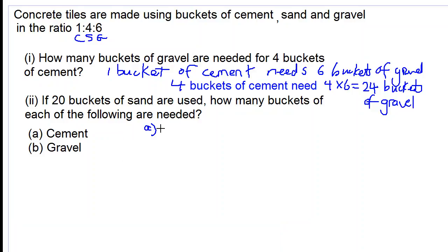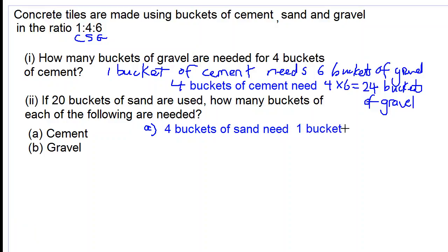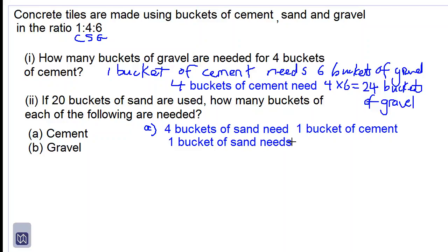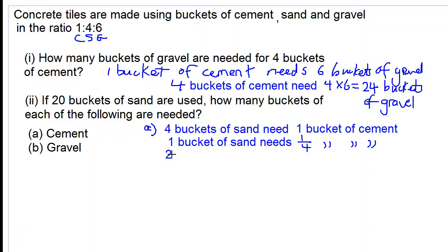Working on part A, from the ratio, four buckets of sand need one bucket of cement. Now let's find for one bucket of sand. One bucket of sand needs less buckets of cement, so we divide the right-hand side by the left-hand side and get one quarter bucket of cement.